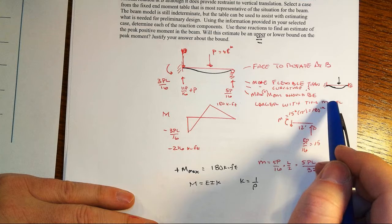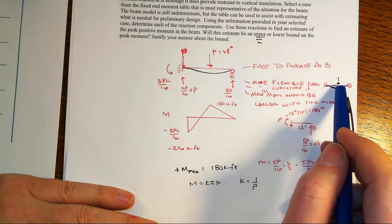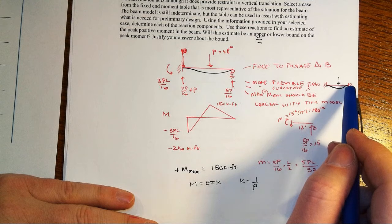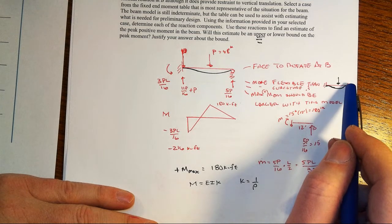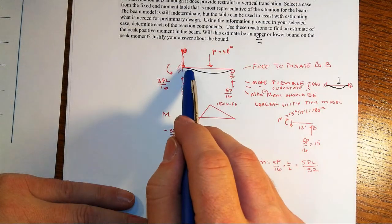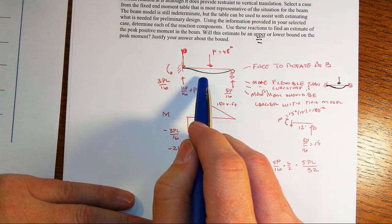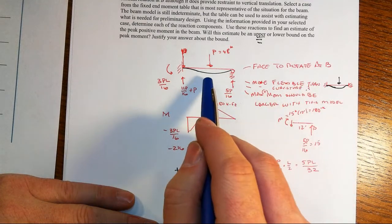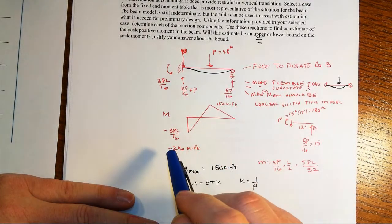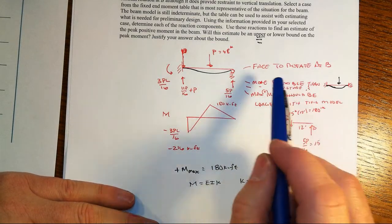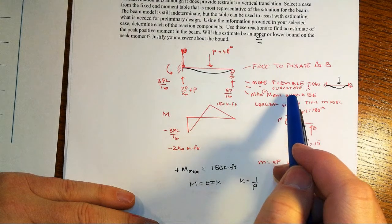We've got little frowny face pieces at the end, and then we've got the smiley face in the middle. If we were to have a fix-fix and then suddenly release or break the moment connection here, this thing would immediately want to pop down more into the kind of shape that we have here. In other words, this situation is the more flexible of these two. That is, the fixed roller one. And if it's more flexible,